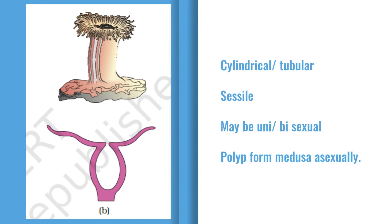Polyp has a cylindrical, tubular shape. One end is fixed. Polyp can be unisexual, but bisexual forms are also present in some Cnidarians.